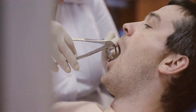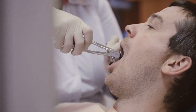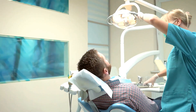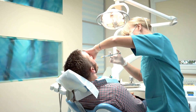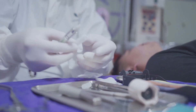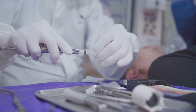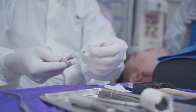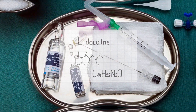Then there's local anaesthesia, which numbs a small specific area of the body. Local anaesthesia is often used for minor procedures, such as dental work or skin surgeries. Like regional anaesthesia, local anaesthetics block sodium channels in nerves, stopping pain signals from reaching the brain. Common local anaesthetics include lidocaine and novocaine.